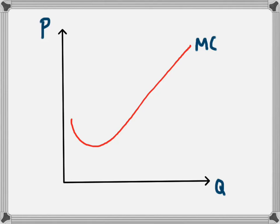In perfect competition the marginal revenue curve is a horizontal line like this. This is marginal revenue.